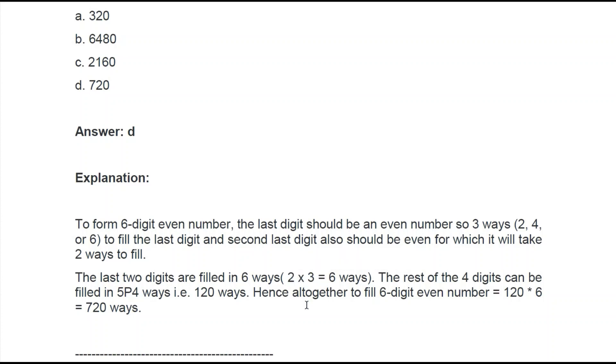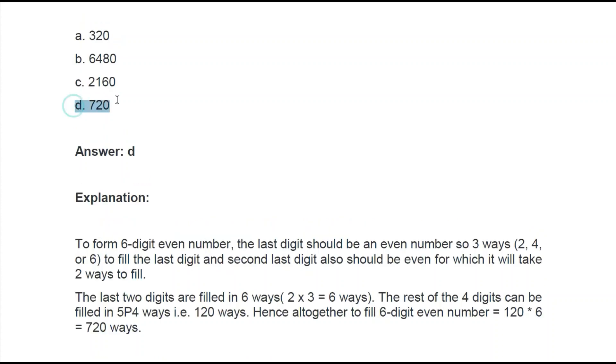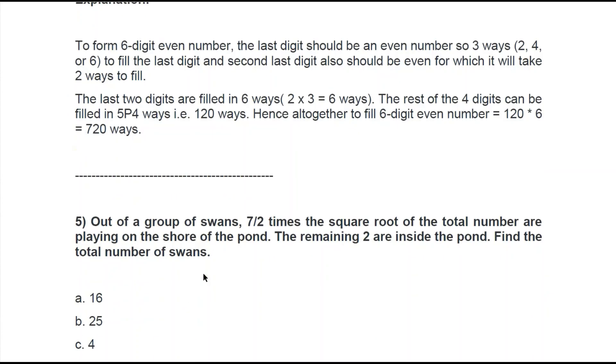The rest of the four digits can be filled in 5P4 ways, which is 120 ways. Hence, altogether to fill the six-digit even number, we have 120 × 6 = 720 ways. Here we have 720 as the answer.